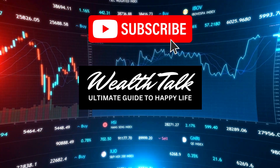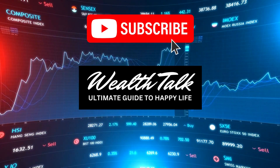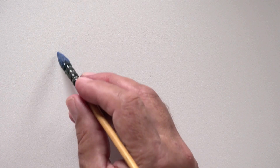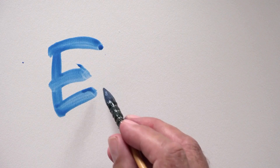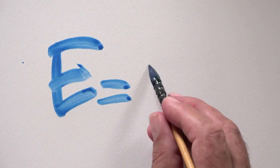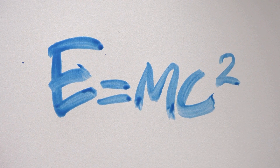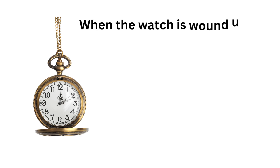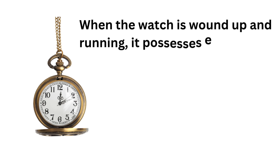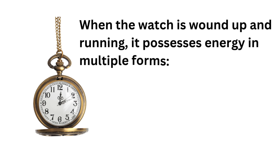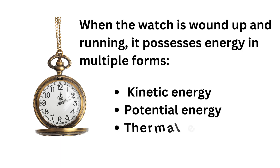Let's get back to our identical pocket spring wound watches. First, let's introduce Einstein's famous equation, E equals mc². This equation tells us that energy E is equal to mass m times the speed of light c squared. What does this mean for our watches? When the watch is wound up and running, it possesses energy in multiple forms: kinetic energy, potential energy, and even thermal energy. Let's break these down.